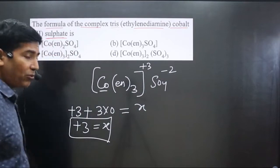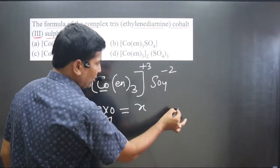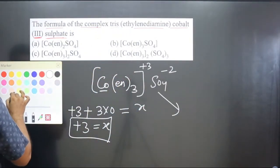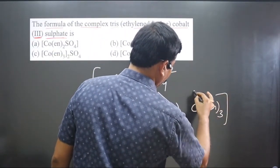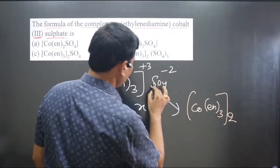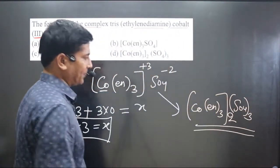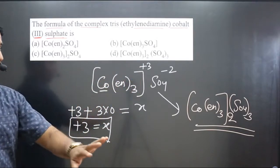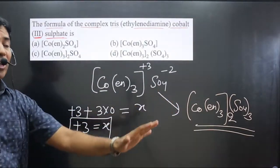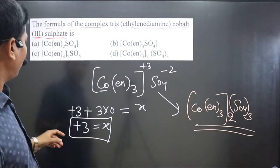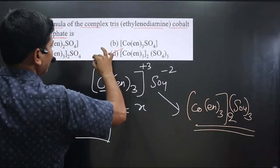Now we balance the charges by crisscrossing the numbers: the cationic charge of +3 and the anionic charge of −2 are swapped as subscripts. This gives [Co(en)₃]₂ for the cation and (SO₄)₃ for the anion. So the final formula is [Co(en)₃]₂(SO₄)₃. Matching this with the options, we get option D as correct.